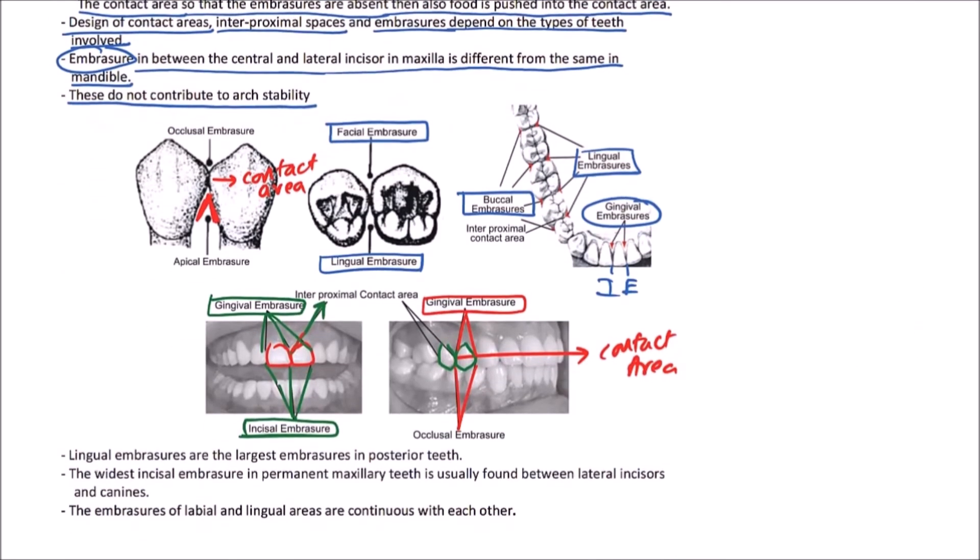Important thing, lingual embraces are the largest embraces in posterior teeth. Here, these are the lingual embraces of posterior teeth. The widest incisal embraces in permanent maxillary teeth is usually found between lateral incisors and canines.